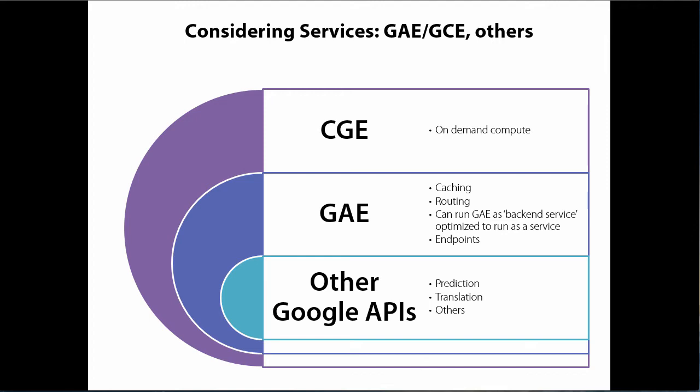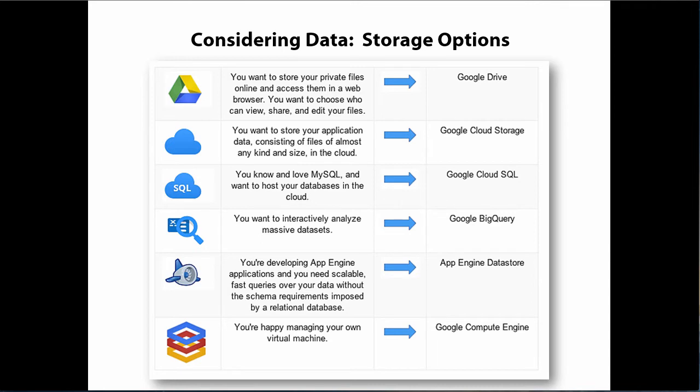Another important consideration in the Google Cloud is if you want to use any of their other rich APIs. Prediction and translation are the ones most frequently used, but they also have everything from Google Drive to YouTube to G+ and everything else. It's important to consider what's going to provide value to your business when you're going out with your particular application.